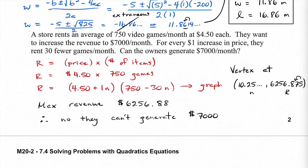For textbook questions, we are on page 430 with numbers 3, 7, and 8. The second part of this video is going to be called 7.4b, so look for that one in the same category. See you next time.